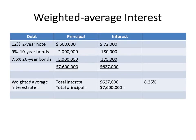For the weighted average rate: say you have a 12% 2-year note, a 9% 10-year bond, and a 7.5% 20-year bond. On a $600,000 balance at 12%, annual interest is $72,000. On a $2 million balance at 9%, annual interest is $180,000. On a $5 million balance at 7.5%, annual interest is $375,000. Total annual interest across all debt outside the specific construction loan is $627,000, on total principal of $7.6 million — giving a weighted average interest rate of 8.25%.